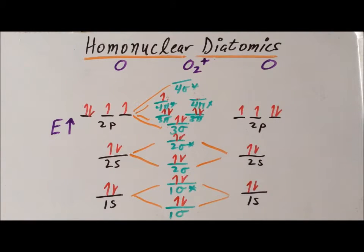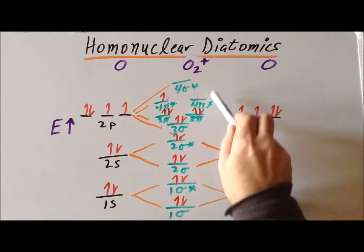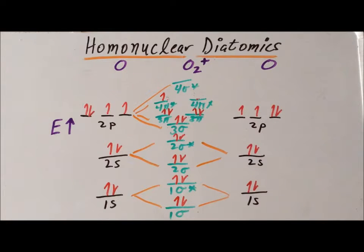Here we see that the molecular orbital theory actually correctly gives us the right answer that removing one electron from O2 actually increases the bond strength. And we can understand why, because the one electron we removed is from an antibonding orbital. So, if we remove electrons from antibonding orbitals, it has the same virtual effect as adding electrons to a bonding orbital.